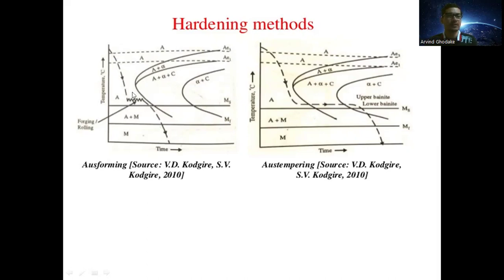Before the start of martensitic transformation, the metal is treated mechanically using the forging or rolling process while in the austenitic phase. This phase represents the forging or rolling process — the mechanical treatment on the material just before the martensitic transformation starts, converting austenite to martensite. This type of mechanical treatment and hardening process is called ausforming.